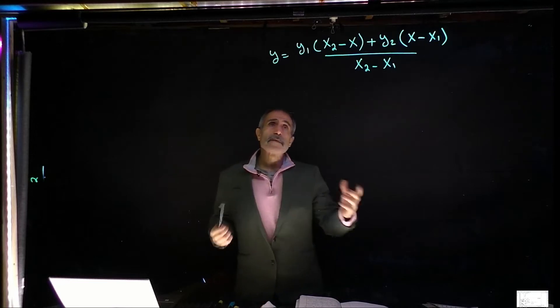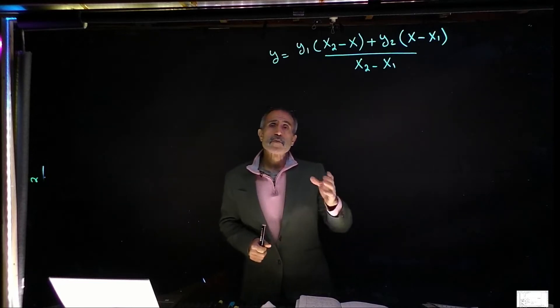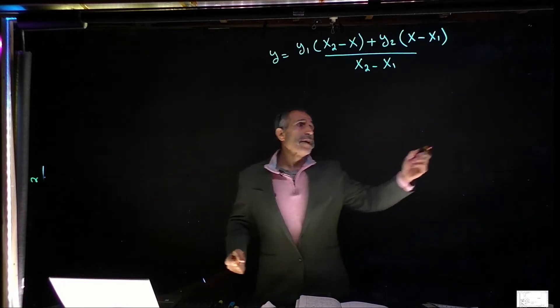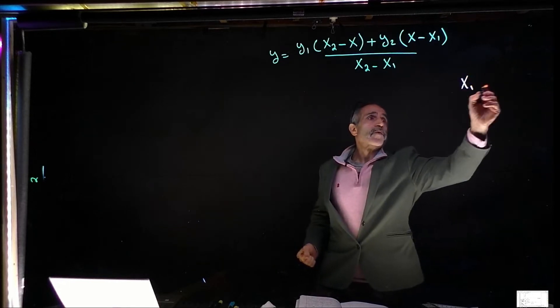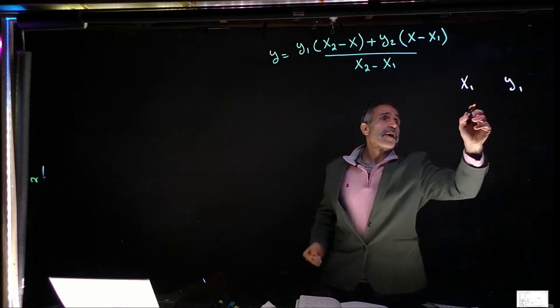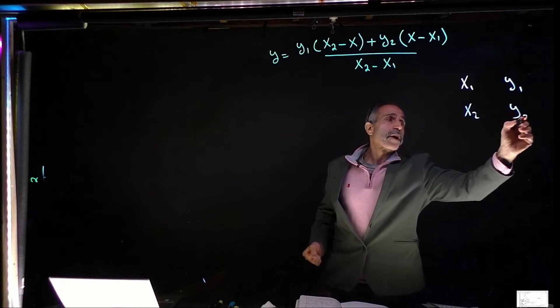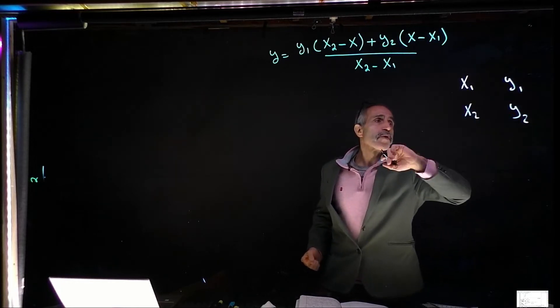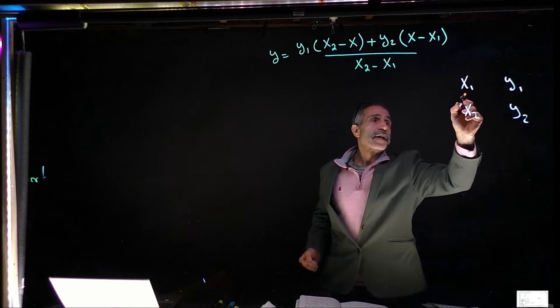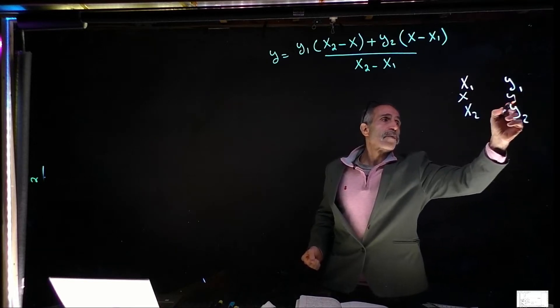For example, you have from a table, you have x1 is equal y1. x1 related to some number called y1. x2 is related to number called y2. But here between you looking for something else is called x and you really don't know y is going to come out to.